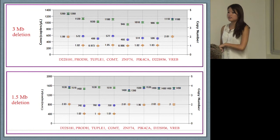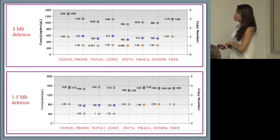It was really easy to differentiate an individual with a three megabase deletion. The copy number drops very severely down to around one. This individual is deleted from ProDH to D22S936.